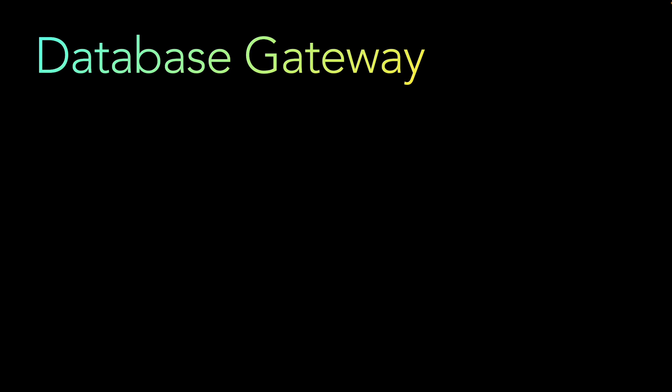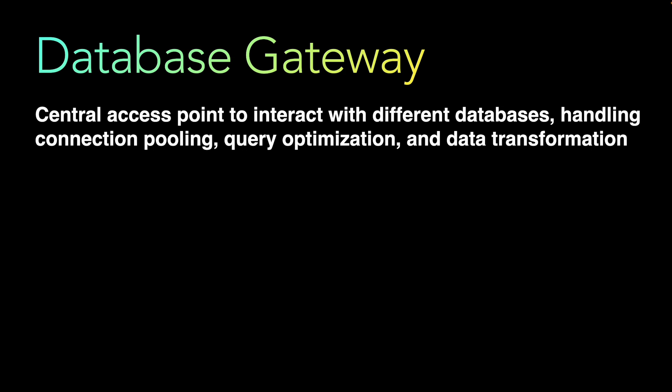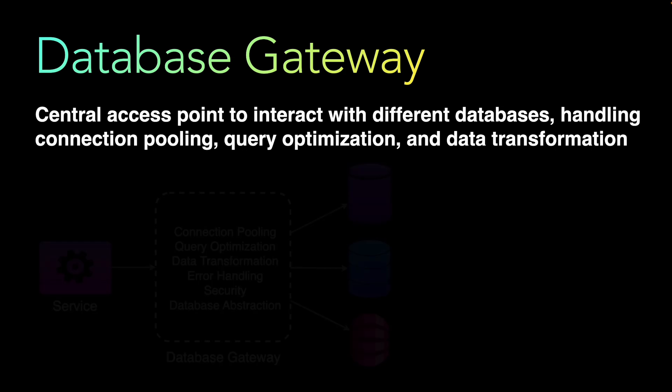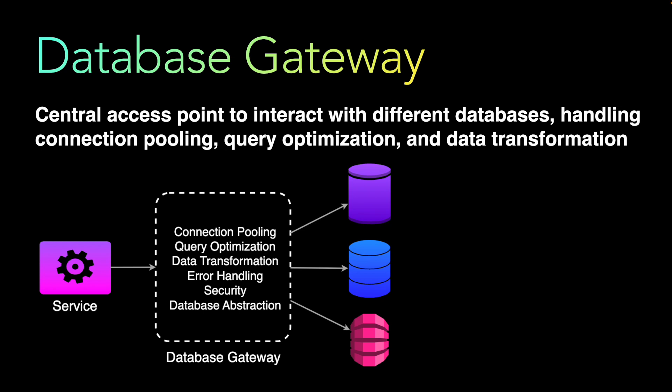Next is the database gateway — a central access point to interact with different databases. It handles connection pooling by managing a pool of database connections to efficiently handle both connection and disconnection overhead. It also performs query optimization to enhance performance and reduce load on the databases, as well as data transformation between the format expected by the application and the format stored in the database.